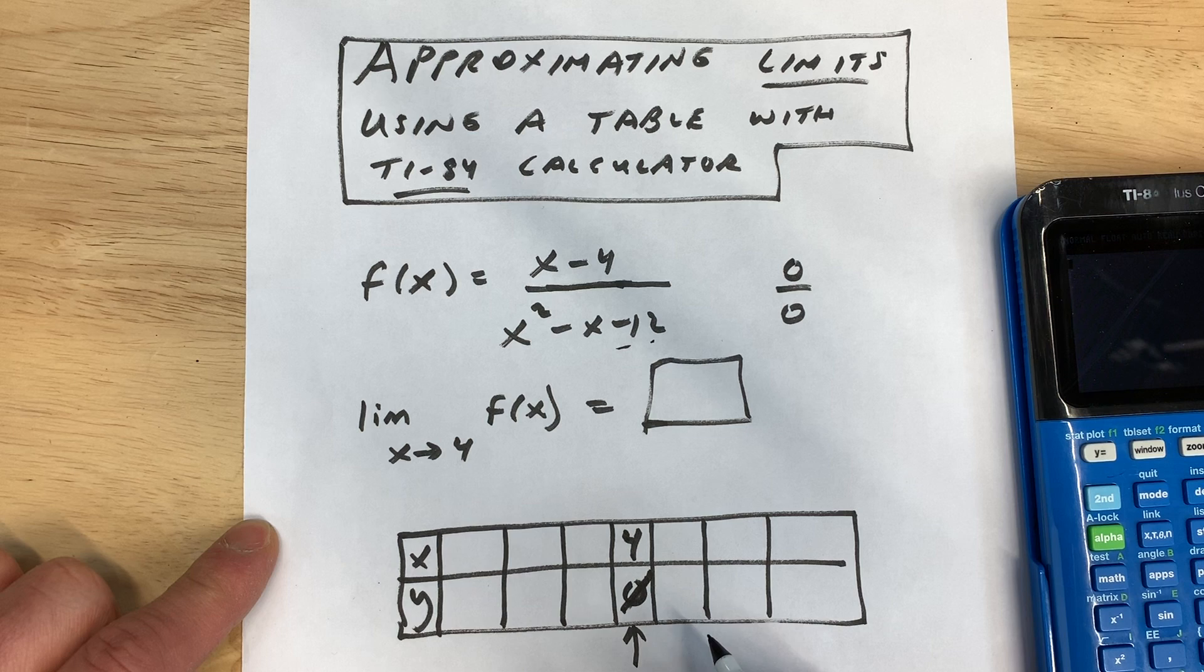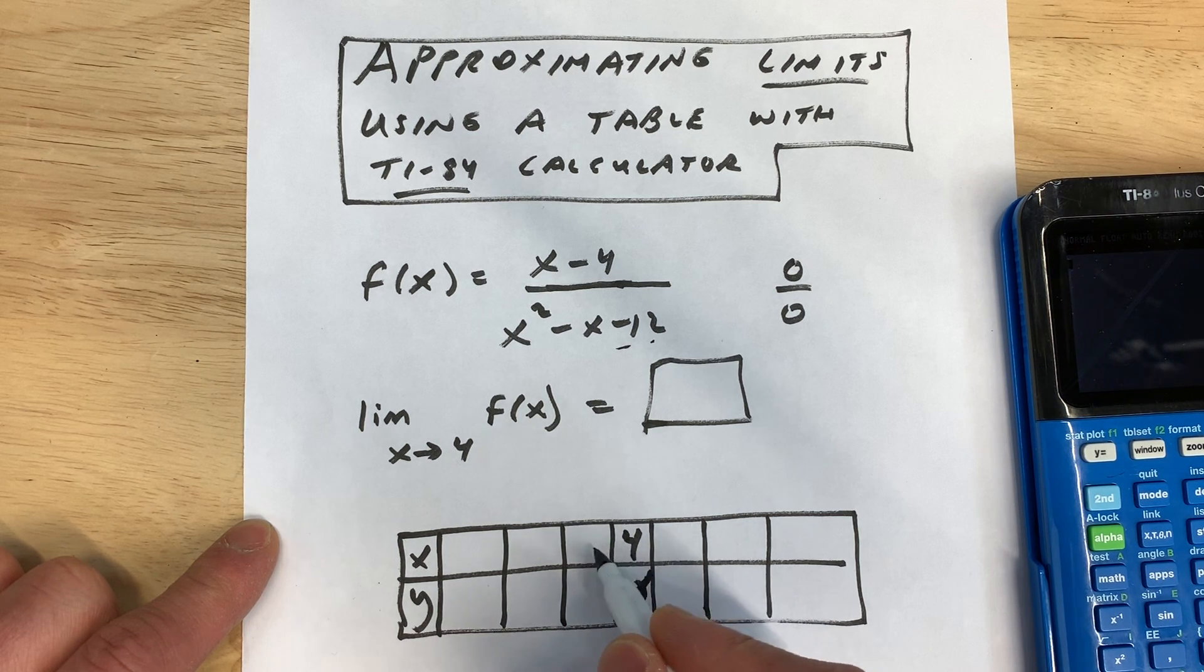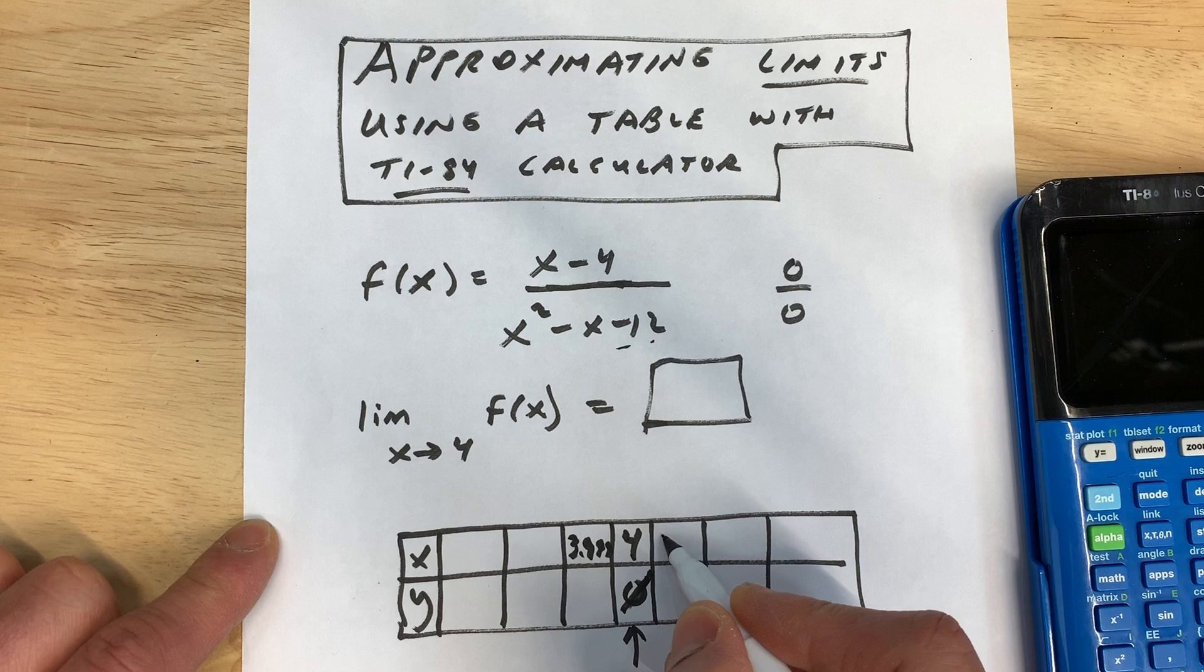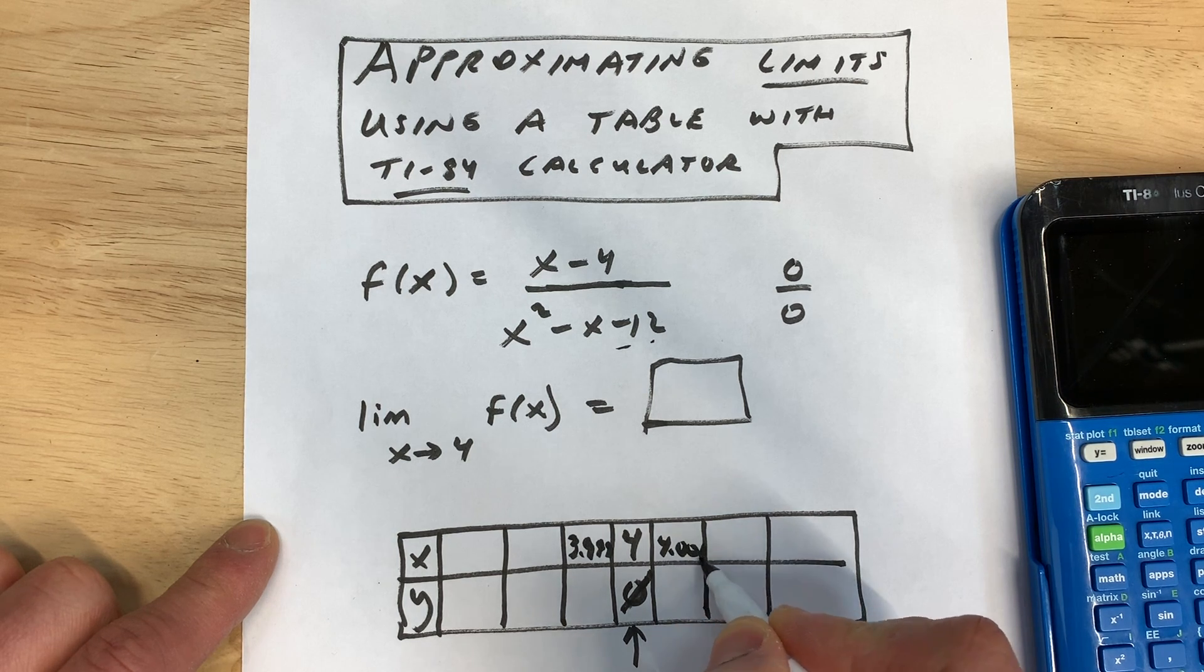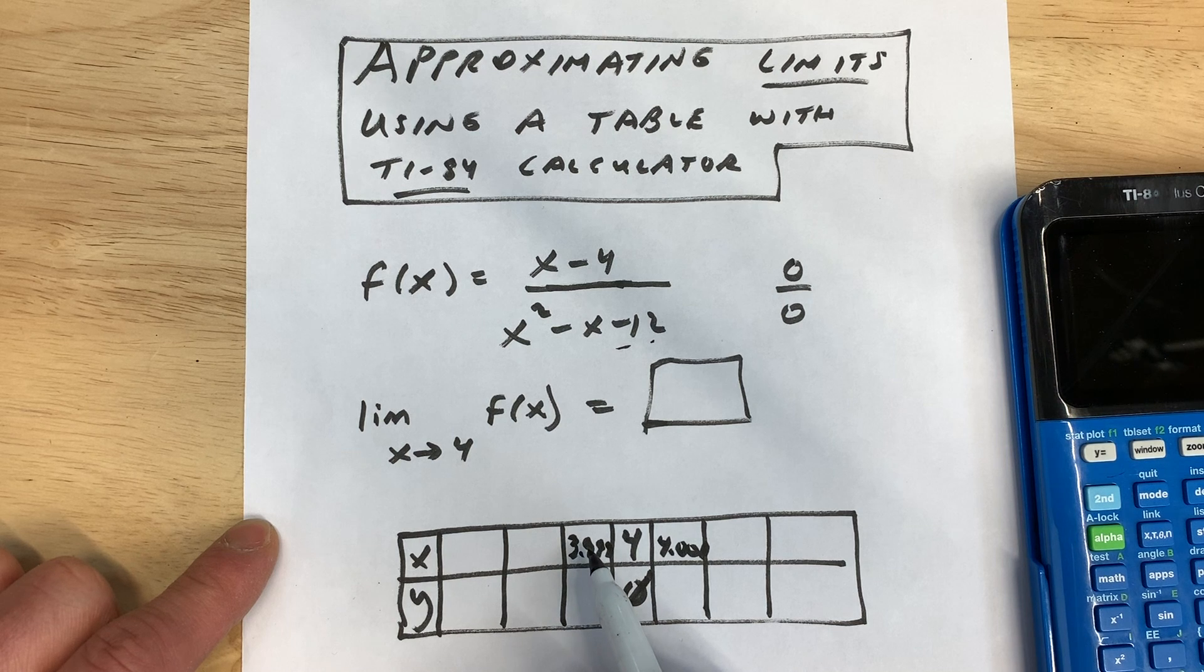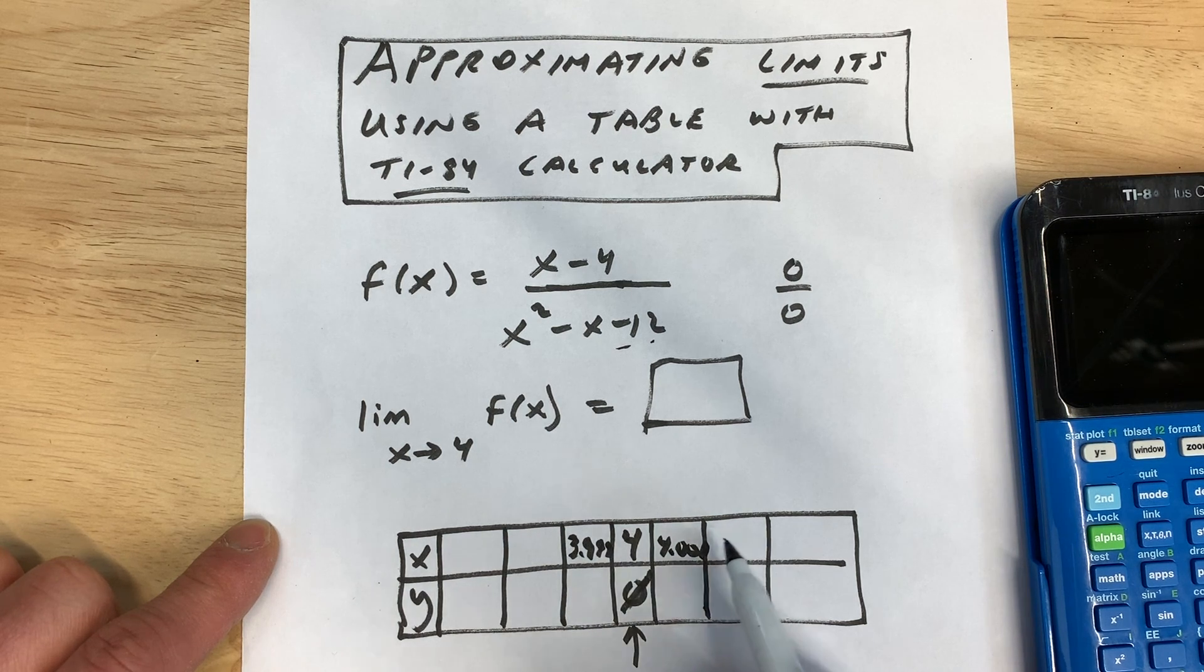So when you put this in on your calculator, you're going to get an error—it's going to say undefined. But the numbers that we want to pick on either side: we want to pick a number that's slightly smaller by a thousandth, so this would be 3.999, and then this one is going to be slightly more, 4.001. So we go larger by a thousandth and smaller by a thousandth, larger by a hundredth and smaller by a hundredth, and then larger by a tenth and smaller by a tenth.